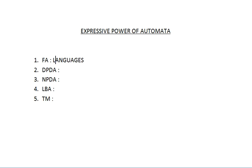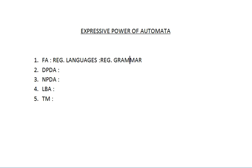Finite automata generally accept regular languages. The rules through which a particular string can be generated are called grammar — always remember, rules mean grammar. Regular languages give you the set of strings, and the grammar in the case of finite automata is regular grammar. So FA is the acceptor, regular language provides the strings, and regular grammar provides the rules.